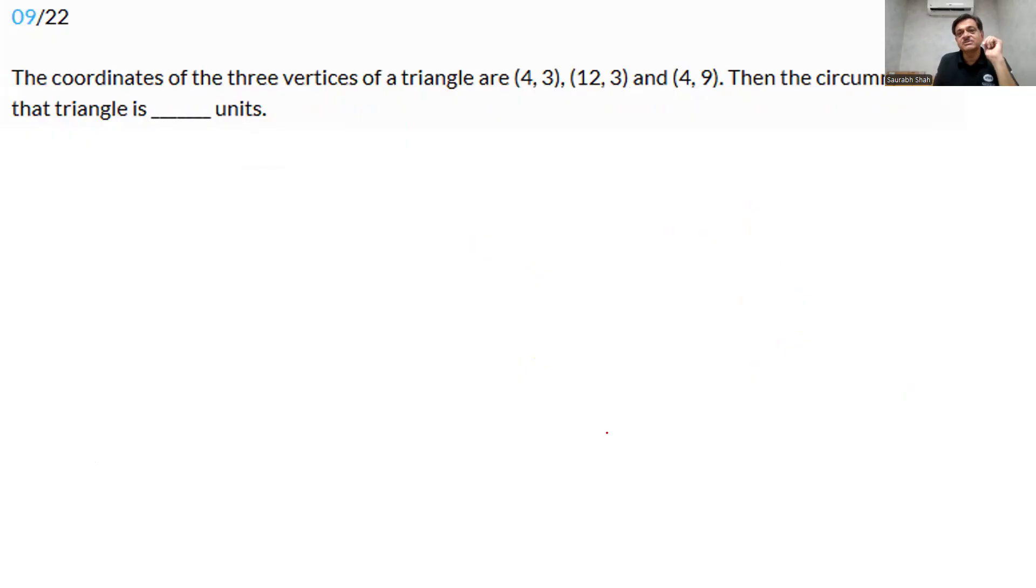Moving on to the ninth question. Ideally, such questions can be quite lengthy. But look, where is your observation skill? Look at the first point, 4, 3. Let's say this is the point 4, 3. The second point is 12, 3. The y coordinate is the same. This is the point 4, 3. And this is the point 12, 3. It's a horizontal line with a length of 8. 12 minus 4, 8.